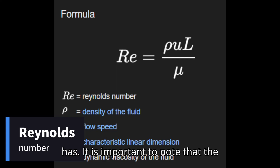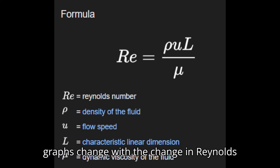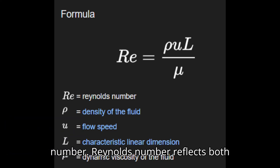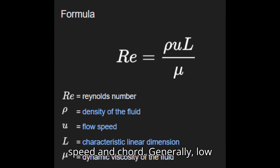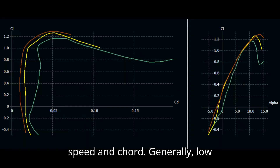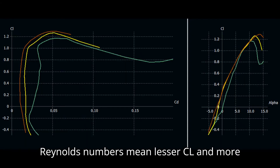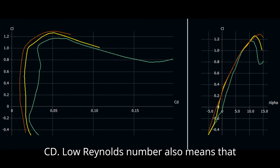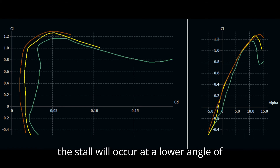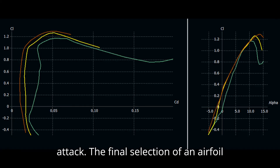It is important to note that the graphs change with the change in Reynolds number. Reynolds number reflects both speed and chord. Generally, low Reynolds numbers mean lesser CL and more CD. Low Reynolds number also means that the stall will occur at a lower angle of attack.